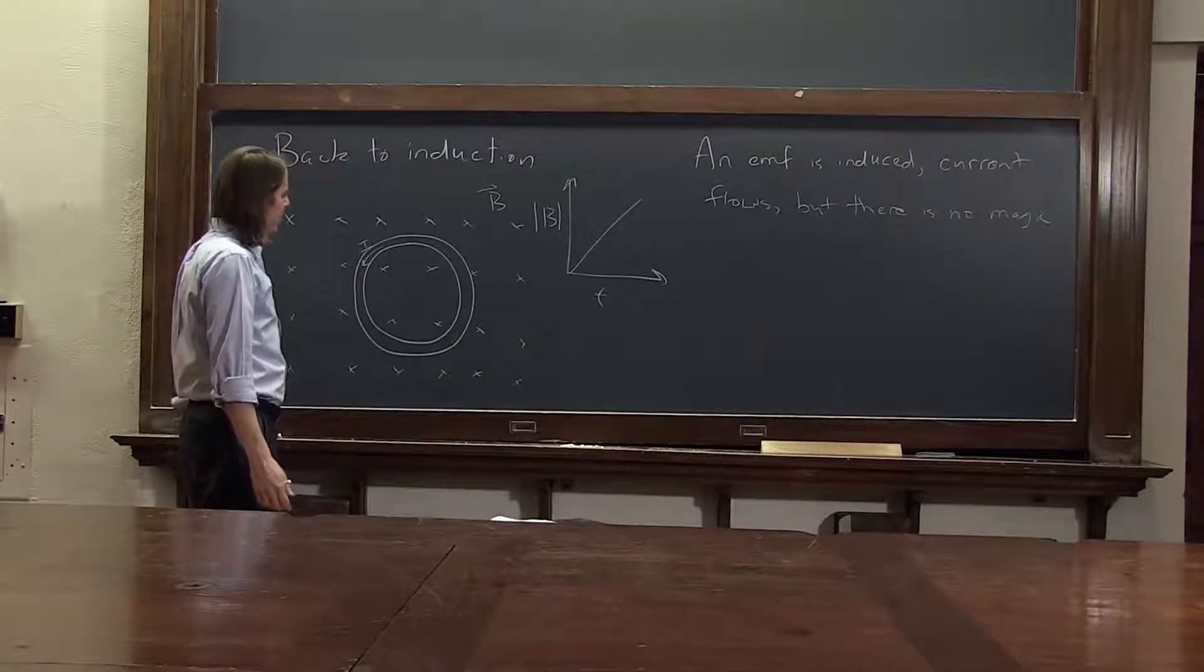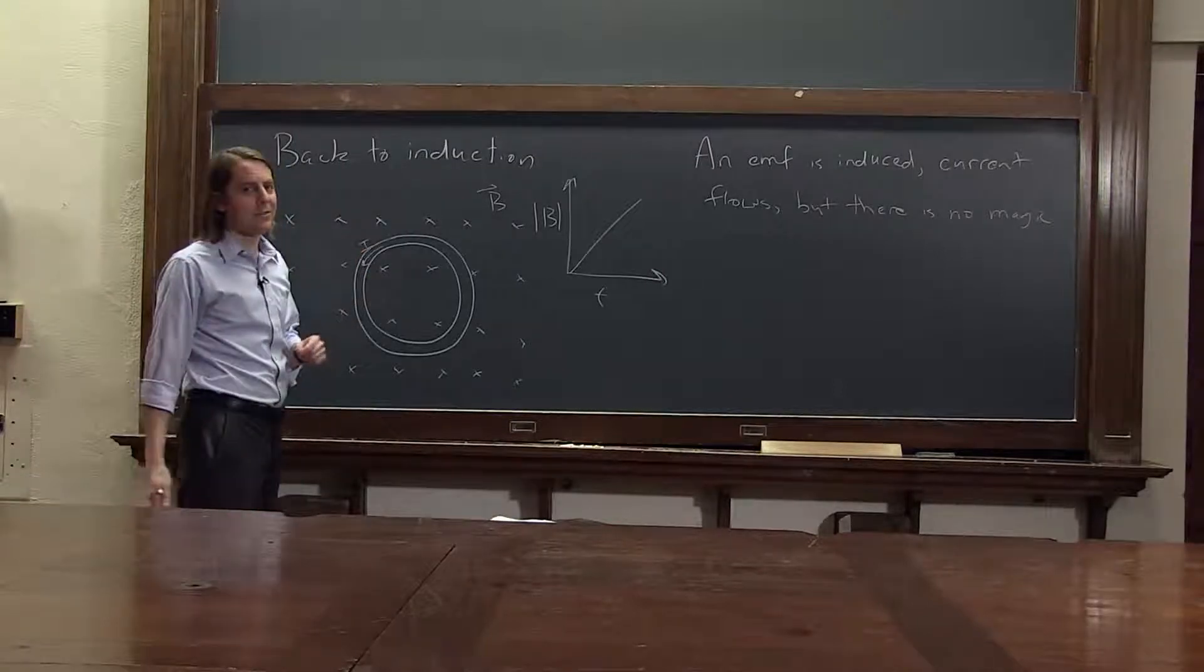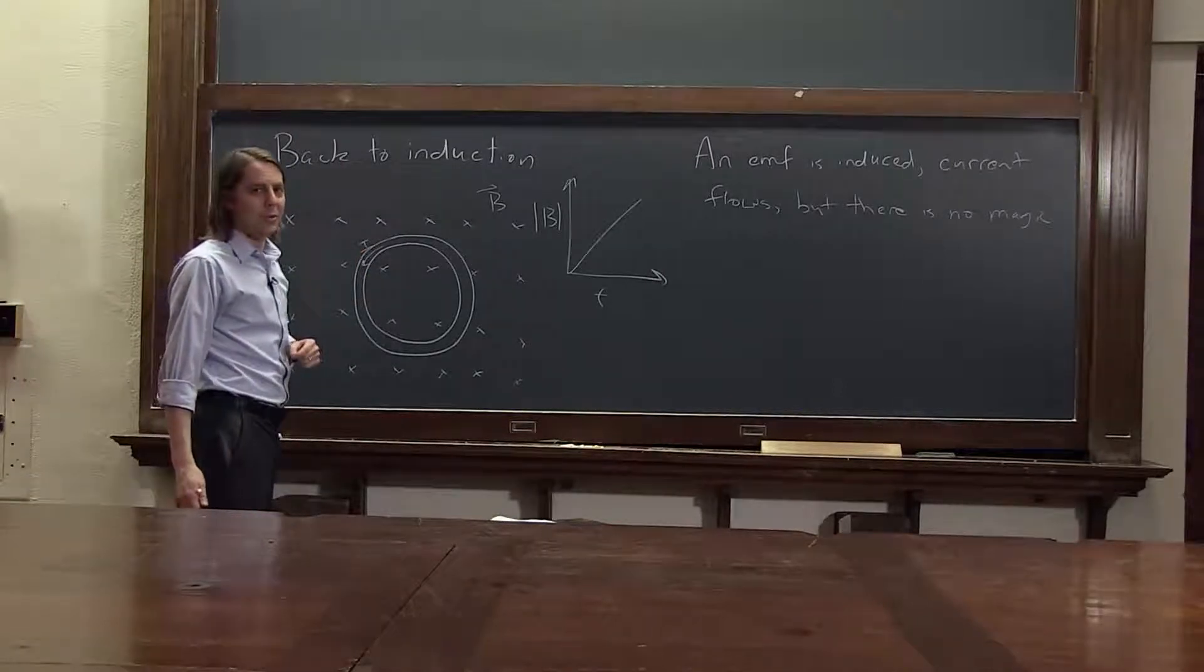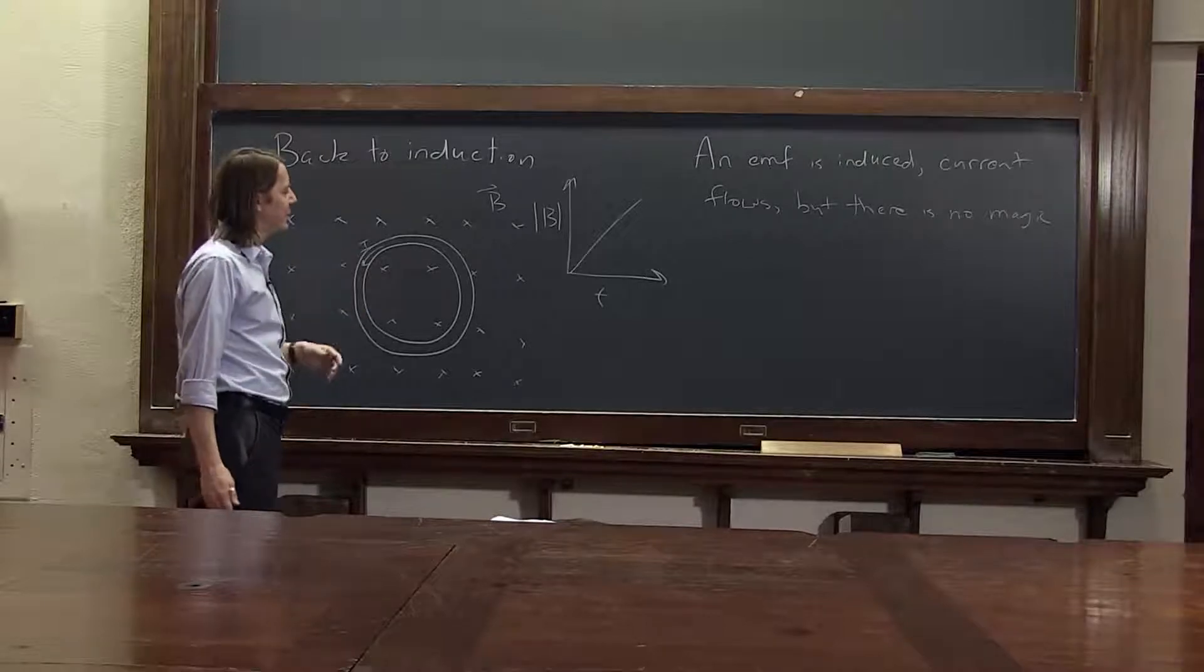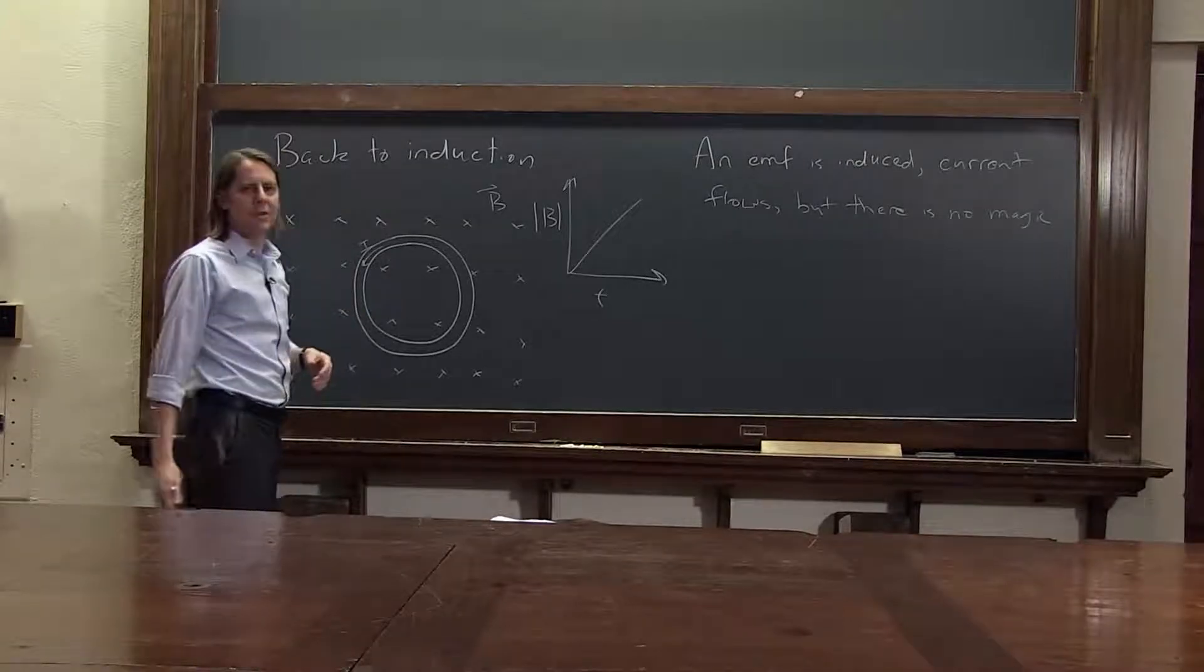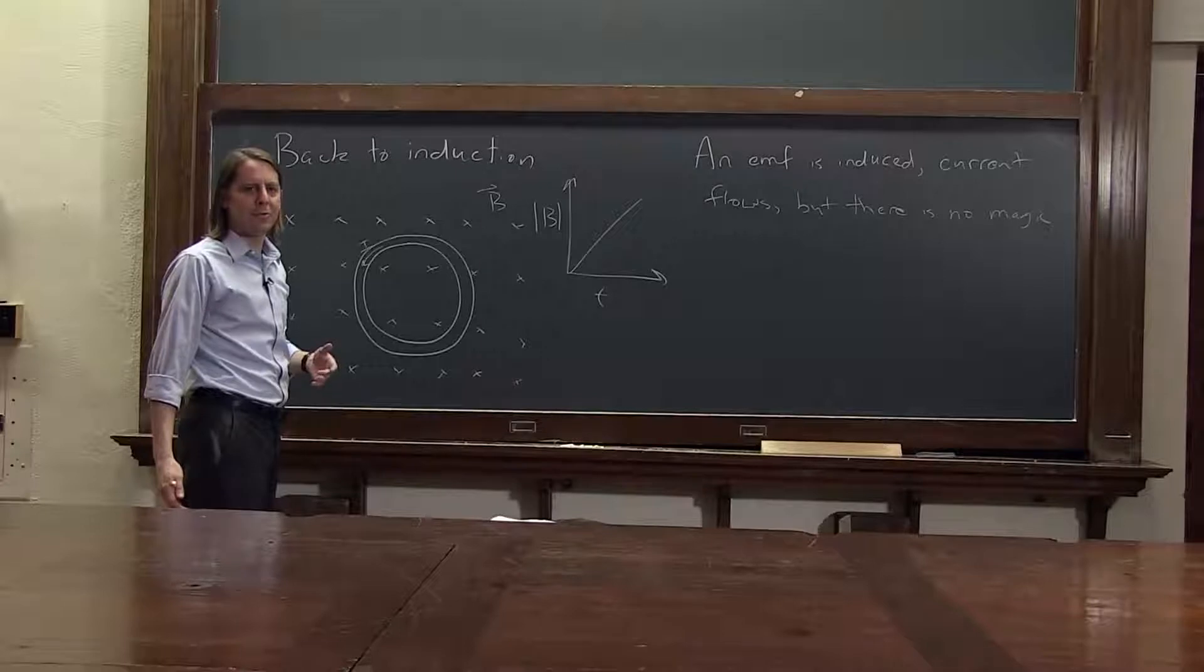It's not the B cross V force, because initially they were just sitting there. The magnetic field isn't making them move. They're being induced to move by the changing magnetic field. If the magnetic field isn't making them move, it must be an electric field.